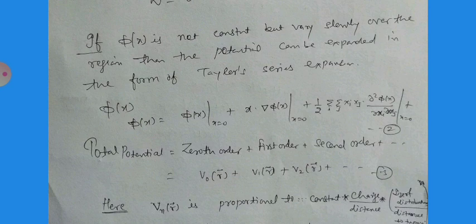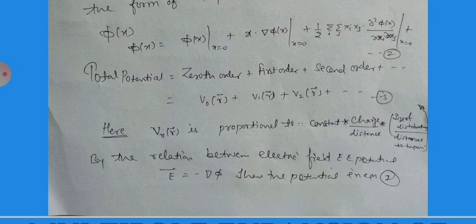The potential can be written as V₀(r) + V₁(r) + V₂(r) + ..., where each Vₙ(r) is proportional to a constant times the charge divided by the distance, multiplied by the ratio of the size of the distribution to the distance of the particles. Using the relation between the electric field and the potential, we know that E = -∇φ.